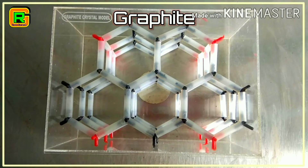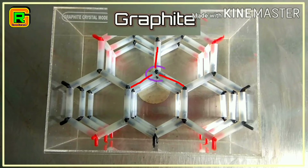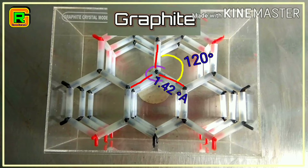Each carbon atom in the graphite layer forms bonds with a bond length of 1.42 angstrom units and a bond angle of 120 degrees.